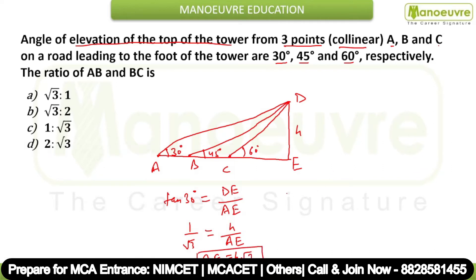Similarly, find tan 45 degrees. Tan 45 equals DE upon BE, which is 1 equals H upon BE. So BE equals H.